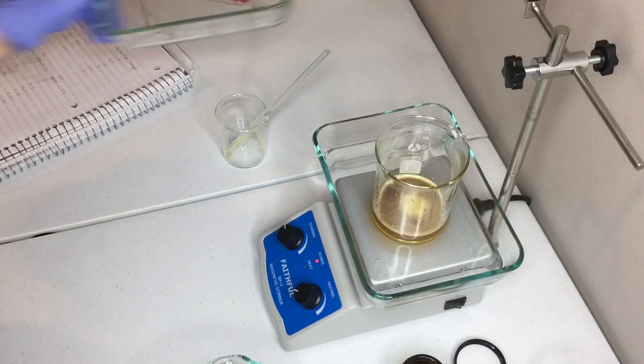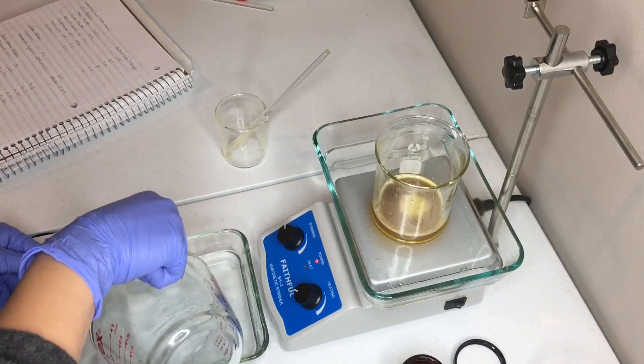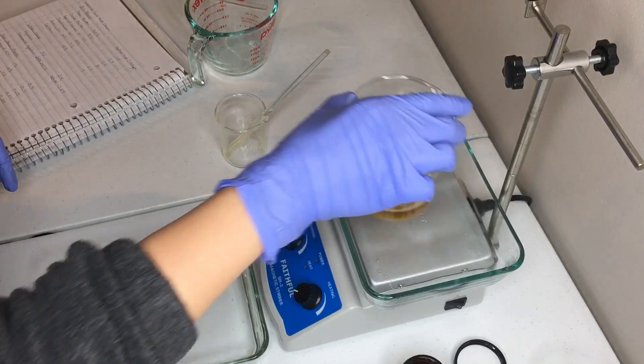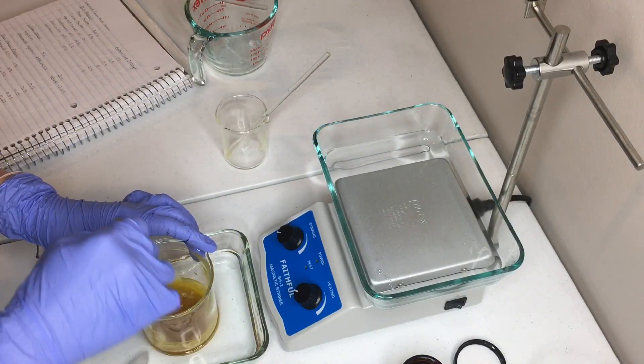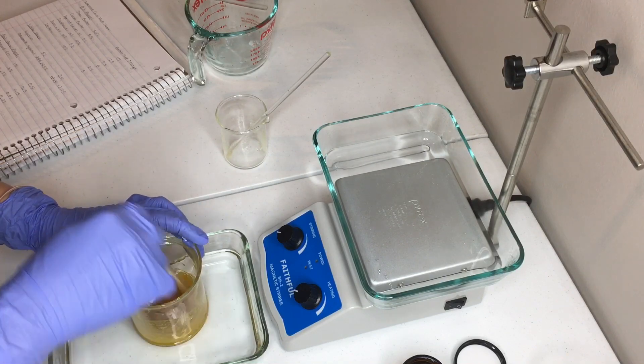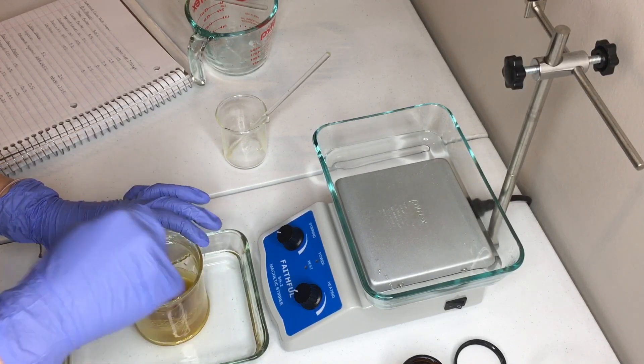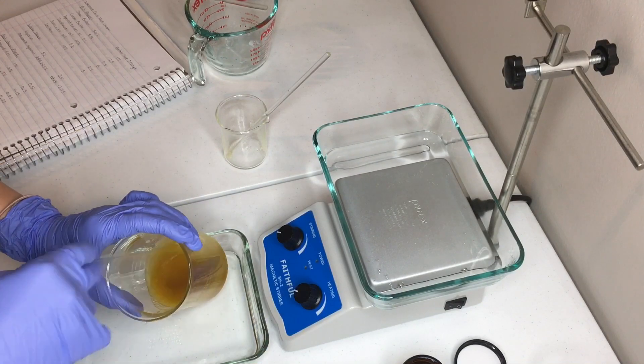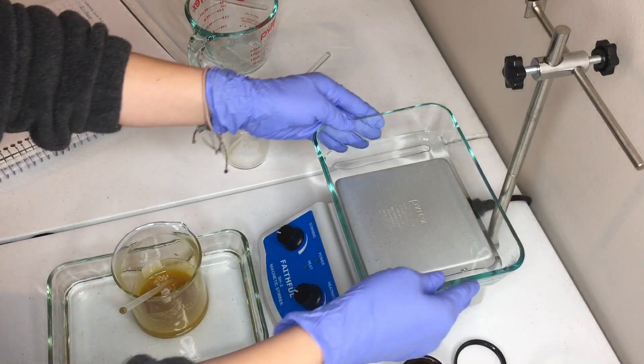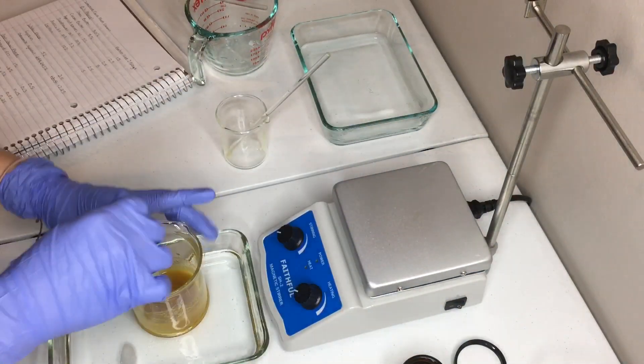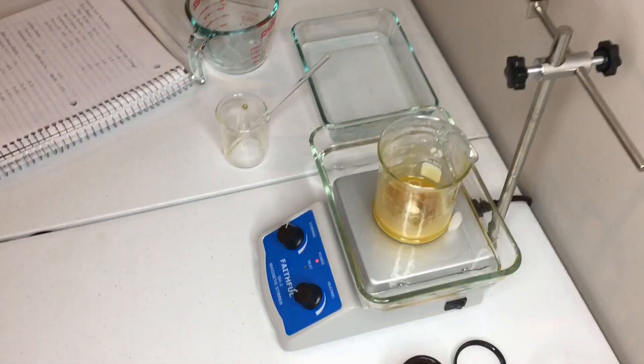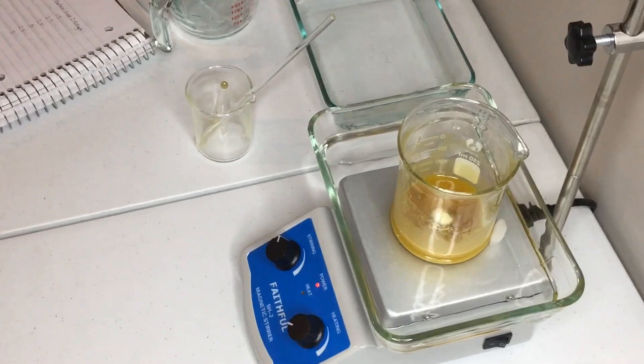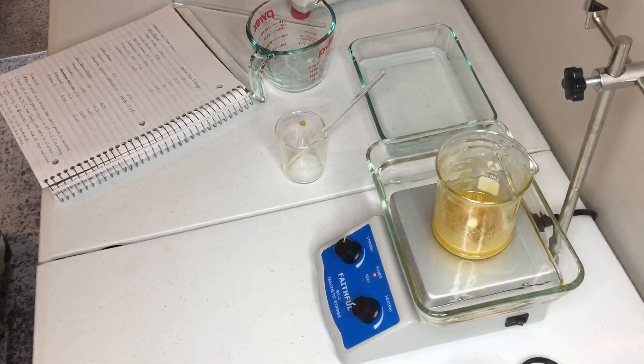So now that I've added all of the water phase into the oil phase, I'm going to go ahead and make a cool water bath and then put my emulsion in there. That way it can start cooling down and thickening up. So now I'm going to let the magnetic stirrer do all of the work. And I'm going to leave it on here in the cool water bath for a little over five minutes.